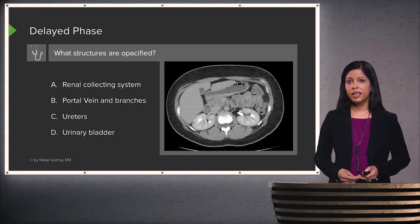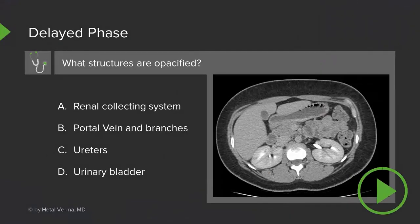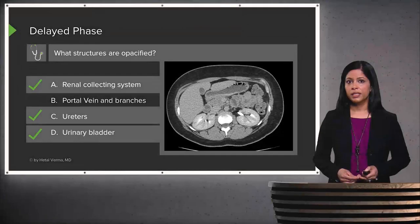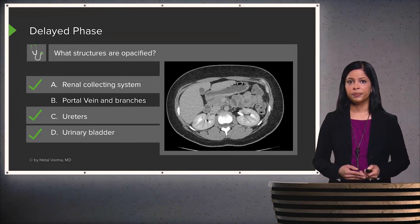And then here we have the delayed phase. As we discussed, the renal collecting system, the ureters, and the urinary bladder are best seen on the delayed phase.